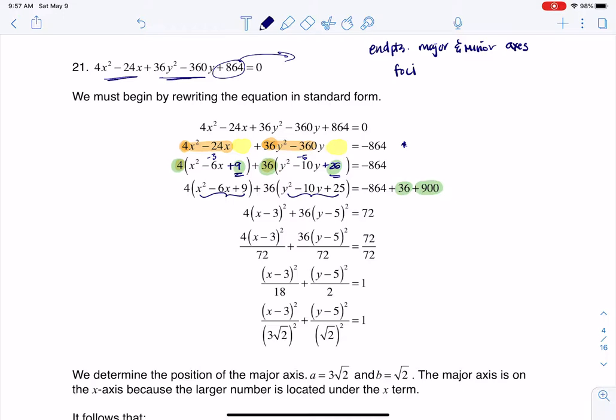And then these trinomials are perfect squares, right? x squared minus 6x plus 9 is x minus 3 squared, and y squared minus 10y plus 25 is y minus 5 squared. That's why we specifically added the 9 and the 25 inside those parentheses—to turn those into perfect squares. So we're getting closer. Whenever we want to get our equation of our ellipse in standard form, we need this number on the right to be 1.